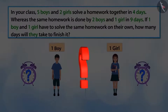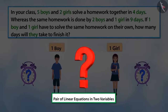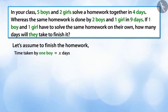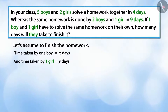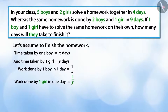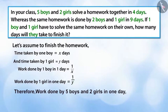Can you write a pair of linear equations in two variables to represent this situation? Let's make a pair of equations. Let's assume that a boy takes x days to finish this work on his own and a girl takes y days to finish the work on her own. Hence, in one day a boy finishes 1/x amount of work and a girl finishes 1/y amount of work in one day. Therefore, work done by five boys and two girls in a day is 5/x + 2/y.